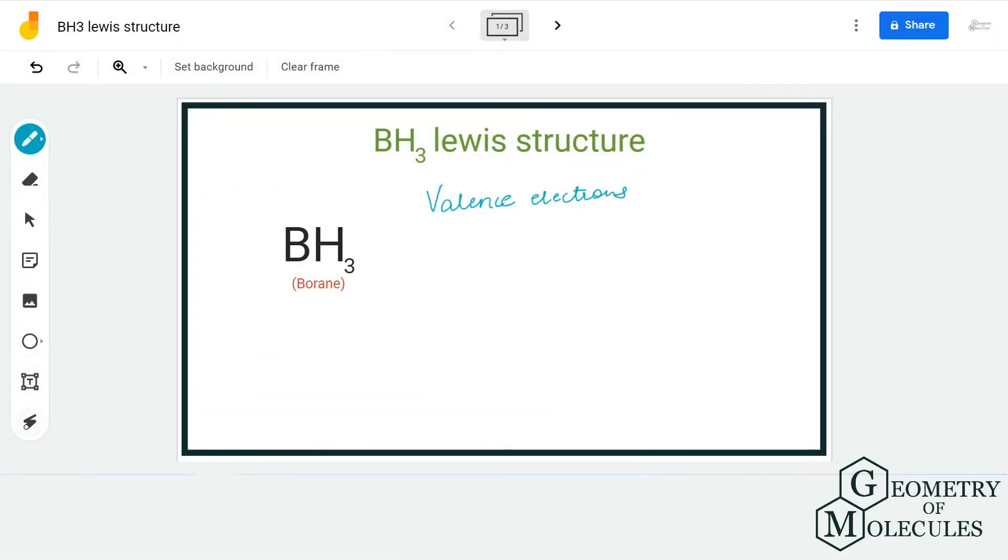Hi guys, welcome back to our channel. In today's video, we are going to show you the stepwise method to determine the Lewis structure for BH3 molecule. It's the chemical formula for borane or boron hydride, and it's a quite simple structure.